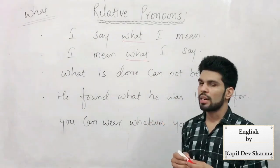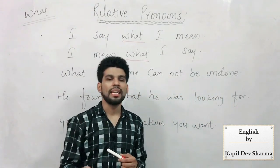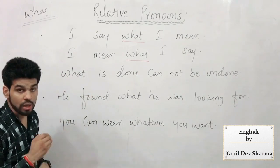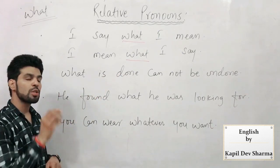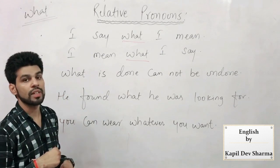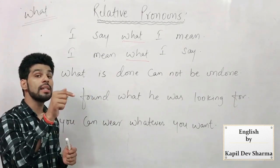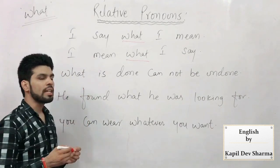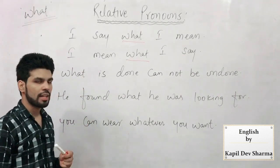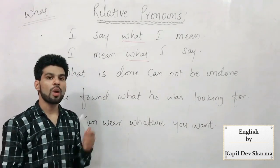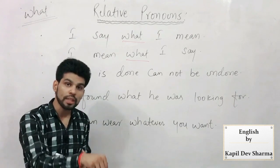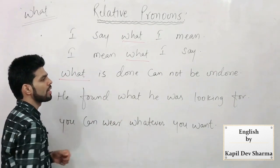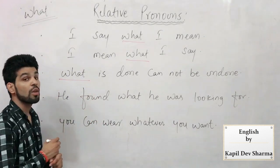'What is done cannot be undone' — joh ho gaya so ho gaya. Ek baar jo cheez ho gayi, usse waapas nahi lahaya ja sakta. Kya sentence mein likha hai kya ho gaya? Probably not — aisi toh kuch nahi likha. Jisko waapas nahi lahaya ja sakta — bhi jo kuch bhi ek baar ho gaya, woh ho gaya — usko phir revert nahi kiya ja sakta. Agar yahan kisi cheez ki baat ki jaati, toh woh subject ho sakta tha — who, whom, which wagaira aa jaata. Chunki yahan kuch bhi mention nahi hai kya hua, isilie relative pronoun 'what' ka istamal kiya. What ka istamal kijiye jab uske paas antecedent nahi ho.